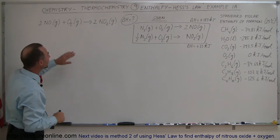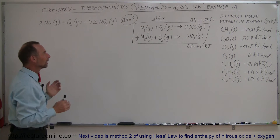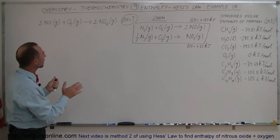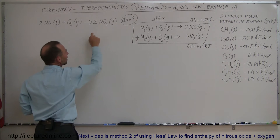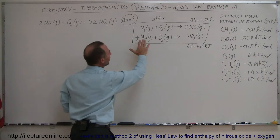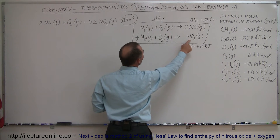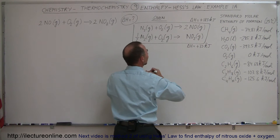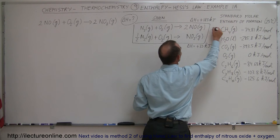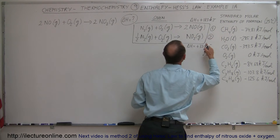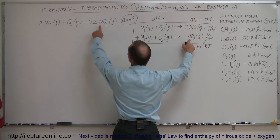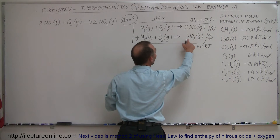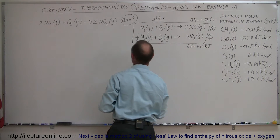So what will be the enthalpy change for this? We take a look at the target equation and we know that we have nitrogen dioxide. We look at these two equations and notice we also have nitrogen dioxide in equation 2. Let's number them: this is equation 1 and this is equation 2. But notice we only have one mole of nitrogen dioxide in equation 2 — we need two of those.